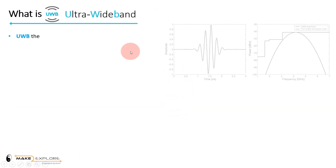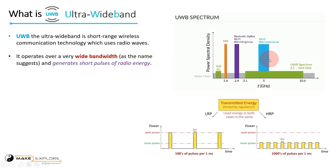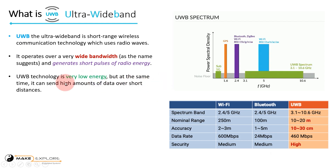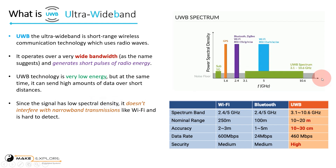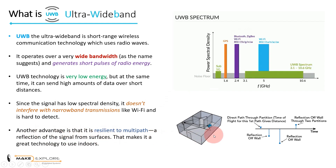In a nutshell, UWB — ultra-wideband — is a short-range wireless communication technology which uses radio waves. It operates over a very wide bandwidth, as the name suggests, and generates short pulses of radio energy. UWB technology is very low-energy but can send high amounts of data over short distances. Since the signal has low spectral density, it doesn't interfere with narrowband transmissions like Wi-Fi and is hard to detect.